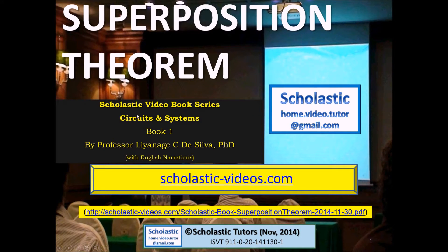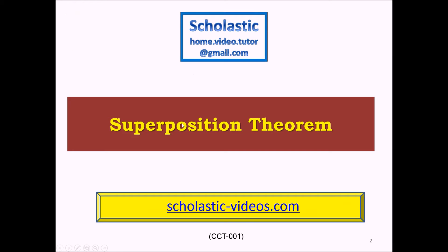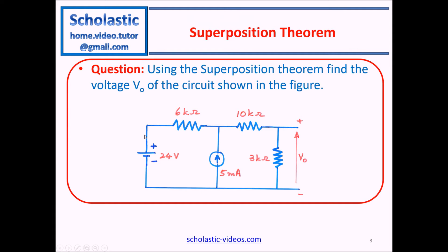Welcome to Scholastic Video Book Series, Circuits and Systems, Book 1: Superposition Theorem. Here we are going to look at a simple example. Using the superposition theorem, find the voltage V0 of the circuit shown in the figure, where there are two sources — one voltage and one current source — plus a few resistors.